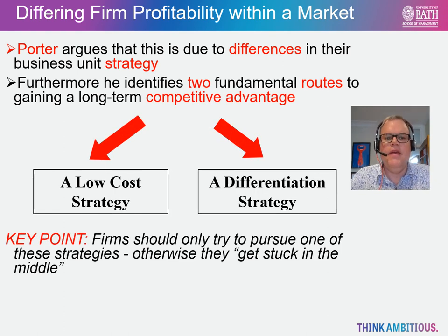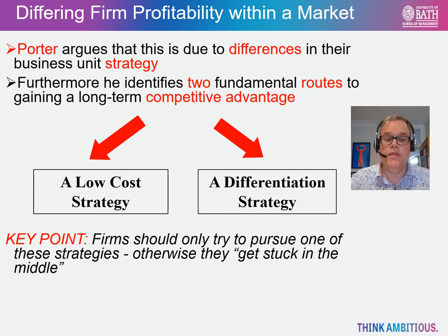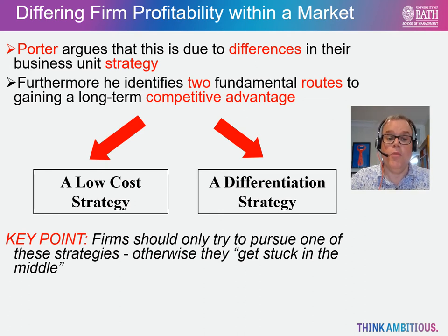Having identified the five forces that determine a market's profitability, Michael Porter then suggests that differences in performance between firms within a market will reflect their managerial choices and business unit strategies. Michael Porter does however outline two fundamental routes for firms to gain a long-term competitive advantage. These are either to pursue a low-cost strategy or alternatively a differentiation strategy, and both of these come with a warning from Porter. Firms should only try to pursue one of these strategies and not a combination of them, otherwise they will get stuck in the middle and will lose out.